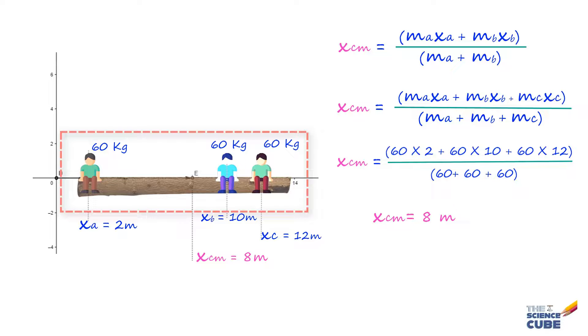In other words, if this setup was balanced at this point, it would be stable and not tip in either direction. So you see this example demonstrates how the concept of center of mass helps in solving real world problems by simplifying complex systems into more manageable calculations.